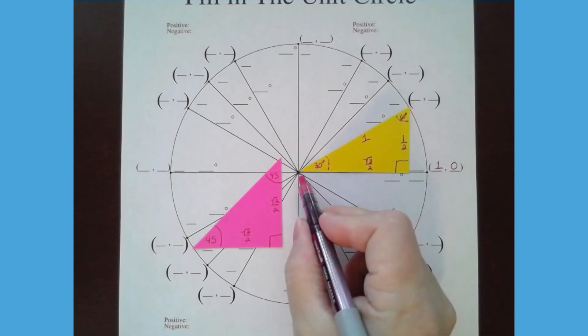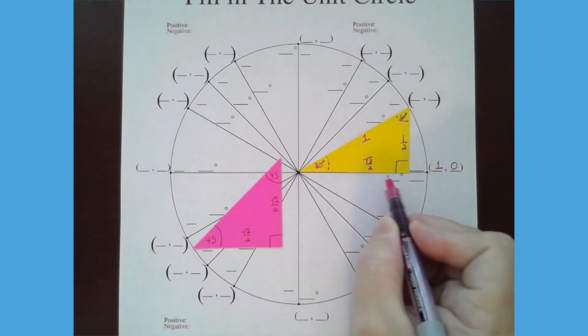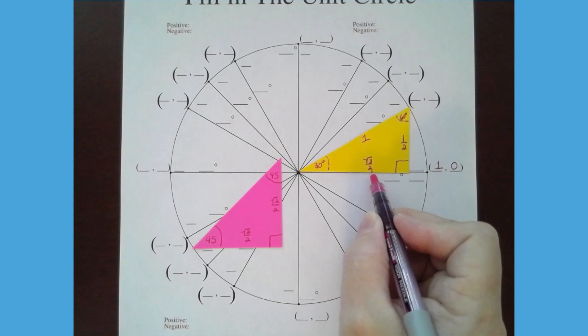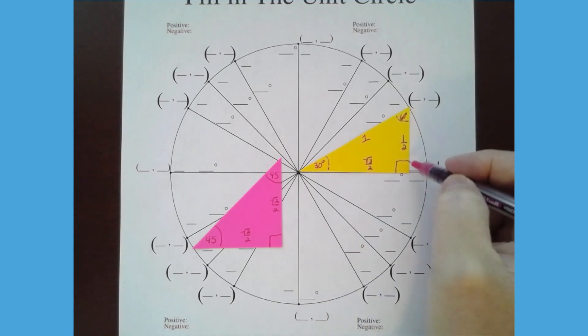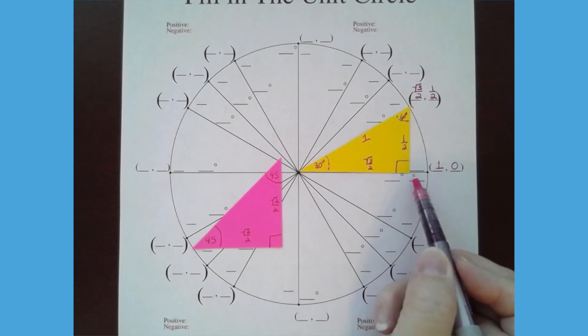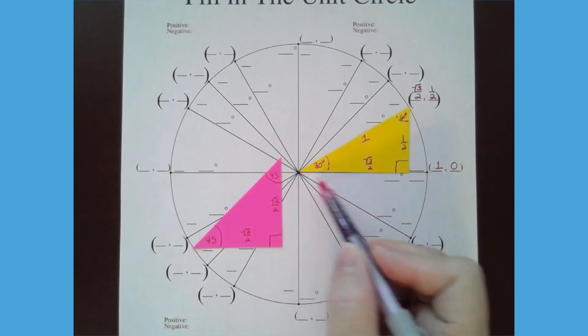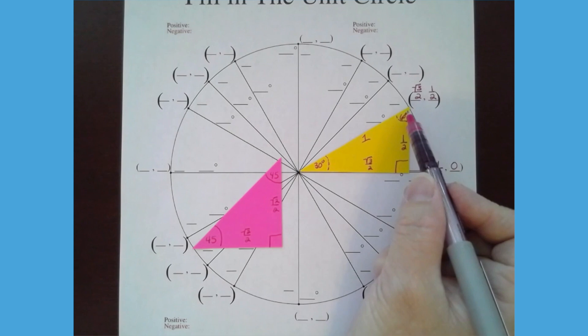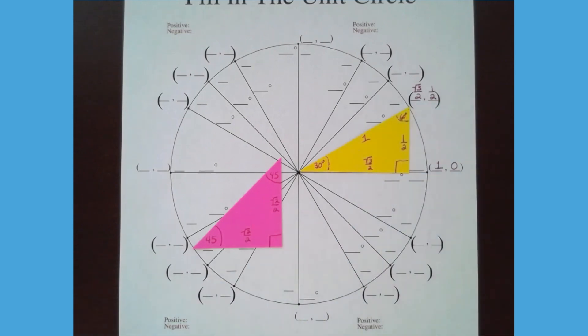And so from the middle, I go over a lot and that a lot is square root of three over two and up a little one half. So I'm going to write that down. Square root of three over two and up one half. Over a lot, but we didn't go all the way over to one, right? We had to stop to go up to that point in the circle. So over a lot, up a little bit.